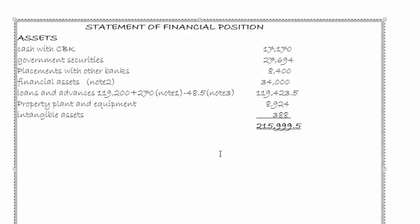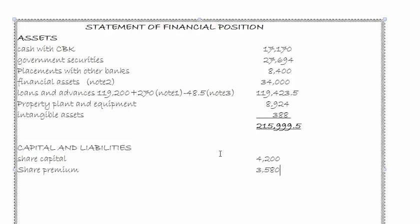Moving to capital and liabilities. Capital is provided as 4,200. Then share premium: 580. Then retained earnings, which is the opening balance of 23,933 plus profit for the year of 16,024.5, giving 39,957.5.